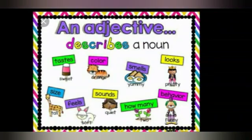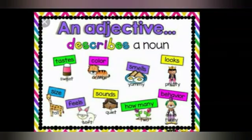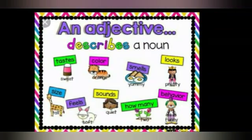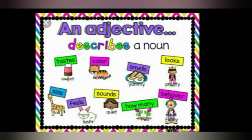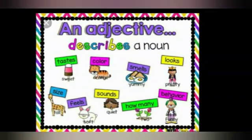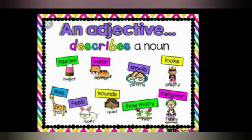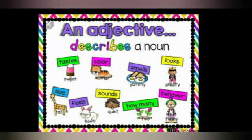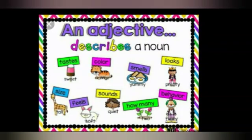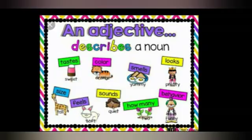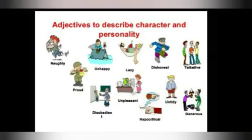We can describe nouns by their taste, color, smells, looks, size, feels, sound, how many — that is number — behavior, and personality. Now we are going to see some example words for describing personality.